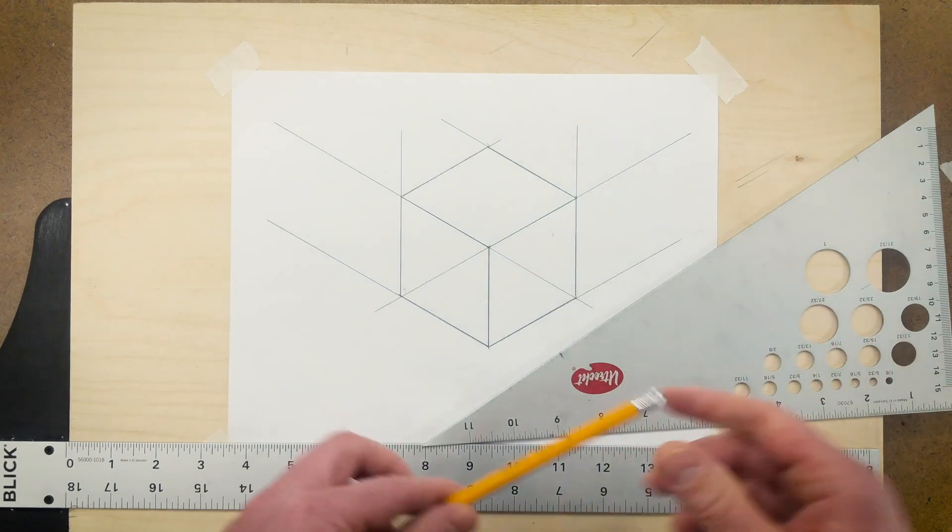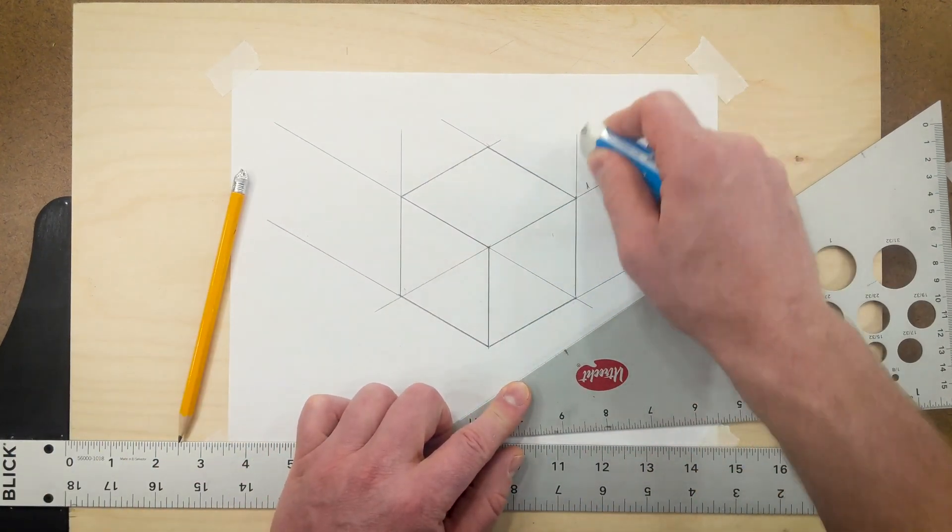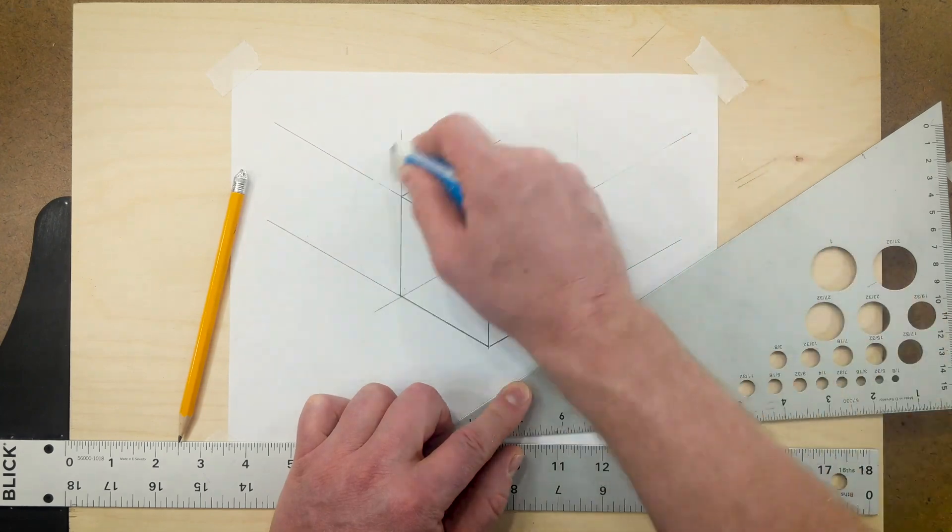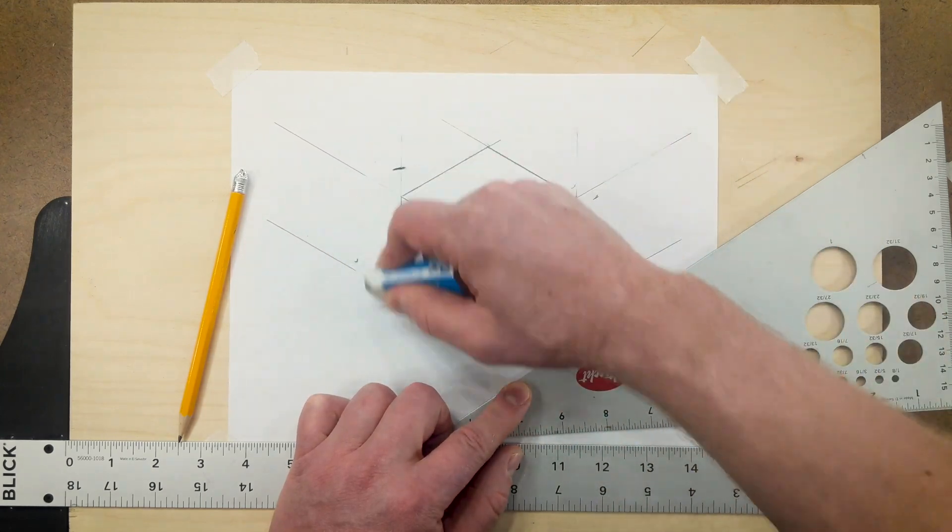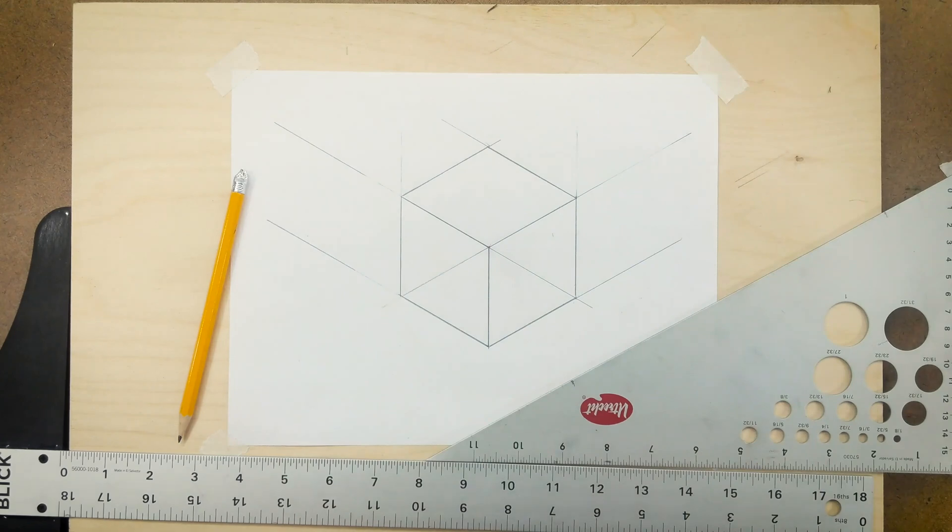Now I have an isometric cube and at this point I can go ahead and erase any stray marks. Of course you would draw all these marks nice and light, but I've drawn them dark so you can see them. Good luck drawing your isometric cubes!